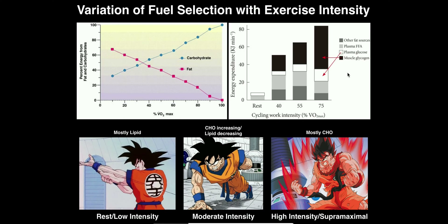The first thing I want to discuss is this graph over here on the right side of the screen, which actually nicely displays two things. The first thing I want to mention is the absolute energy expenditure — at a given exercise intensity, how much overall energy do you need to perform that work? As we go up in intensity, we're going to need more and more energy, irrespective of where the energy is coming from. The absolute energy expenditure is indicated by the height of the overall bar. Obviously at rest it's going to be the lowest, and at 75% of VO2 max, we have the highest absolute energy expenditure shown.